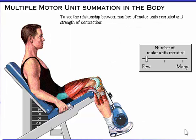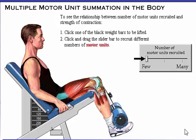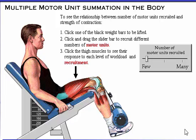To see the relationship between number of motor units recruited and strength of contraction, first click one of the black weight bars to be lifted. Next, click and drag the slider bar to recruit different numbers of motor units. Then click the thigh muscles to see their response to each level of workload and recruitment.